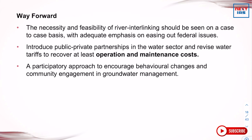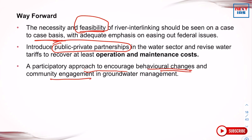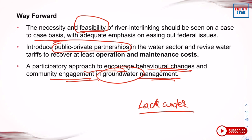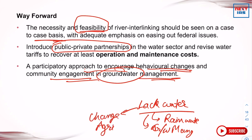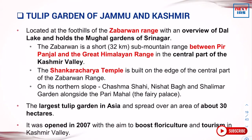The way forward requires careful feasibility study on a case-by-case basis. Public-private partnerships can help share the project cost and reduce pressure on the government sector. A participatory approach encouraging community engagement in groundwater management is also important. Before undertaking such massive interlinking projects, other options like rainwater harvesting, groundwater management, and increasing water use efficiency in agricultural practices should also be explored.